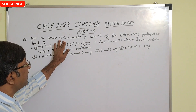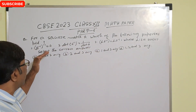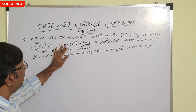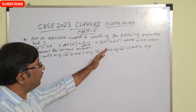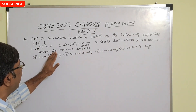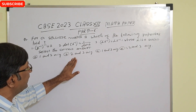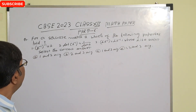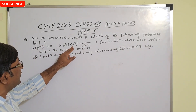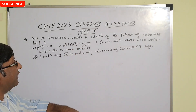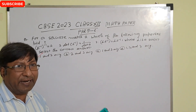For a square matrix A, which of the following properties hold? (1) A inverse to the inverse equals A, (2) determinant of A inverse equals 1 by determinant of A, and (3) alpha times A inverse equals alpha into A, where alpha is a scalar. Property 1 is correct: inverse of inverse equals A. Property 2 is also correct. But property 3 is not correct. So the correct answer is 1 and 2 only — option A.